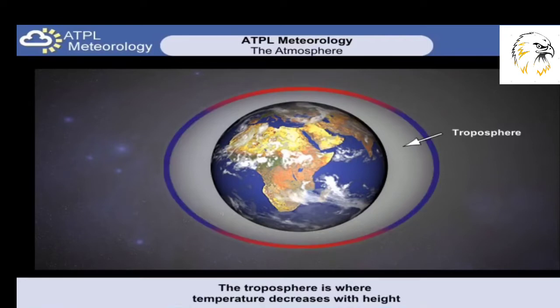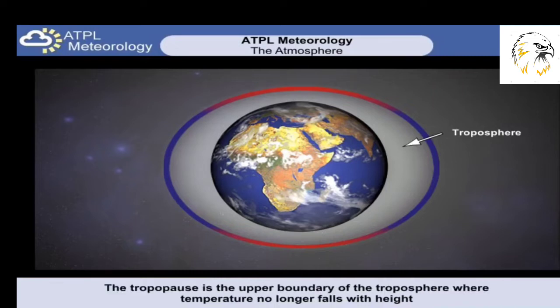The first of these segments, or layers, is called the troposphere. This layer is closest to the Earth, and its defining characteristic is the marked decrease in temperature with height throughout the layer. Where the temperature no longer decreases with height defines the upper part of the troposphere. This upper boundary we call the tropopause, where temperature is constant with altitude.